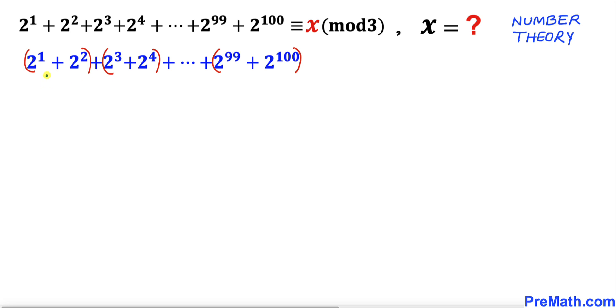In this first parentheses, 2^1 is in common. In this second group, 2^3 is in common, and likewise this one has 2^99 in common.